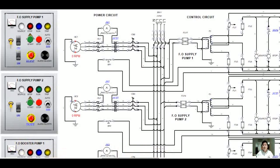The fuel oil supply system and the fuel oil booster pump system work together — when the fuel oil supply pump runs, the booster pump is also running. The booster pump is also called the circulating pump, and it circulates fuel to the injection pump of the engine. We will discuss that in more detail later, as this is a series of tutorials.